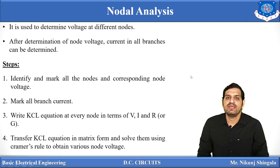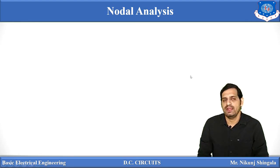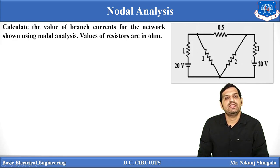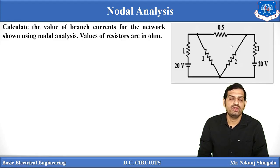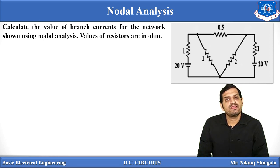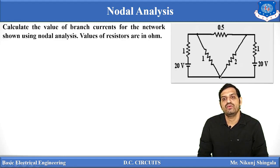Now let us see one example based on nodal analysis. A network is given and we have been asked to determine the branch currents. The resistance values are in ohms. The network consists of two batteries, both having the same voltage of 20 volts. In nodal analysis, the first step is to determine the node voltages. There are three nodes: nodes one, two, and three.